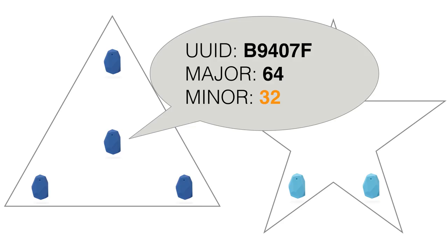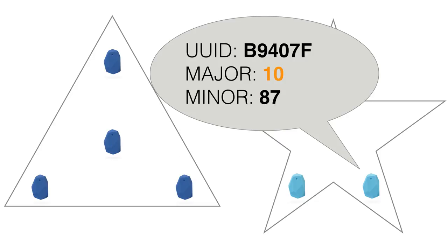Your challenge is to declare your beacons in your back-end so that you know exactly where each beacon is located in each store. Beacons located in the triangle shop will all have the same major ID but a different minor ID. Beacons located in the star shop will have a major ID different from the ones in the triangle shop, and all of them will share the same major ID inside the star shop but a different minor ID. Note that all the beacons in both shops share the same UUID.